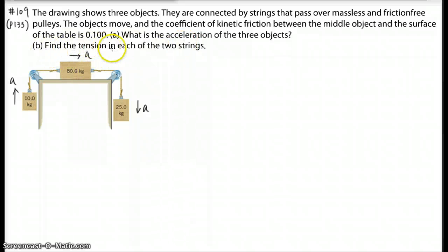And then part B finds the tension in each of the two strings. So asking for the tension in this string, same as here, in this string, same as here. The reason the tension is same here and here is because the pulley is massless and frictionless. So let's first of all draw a free body diagram on each one.